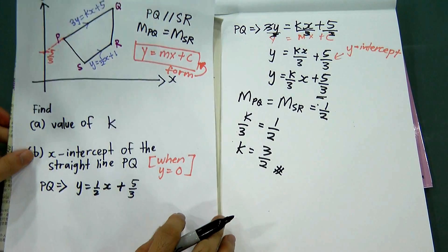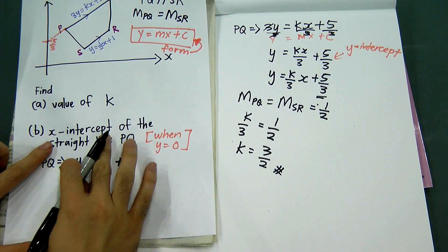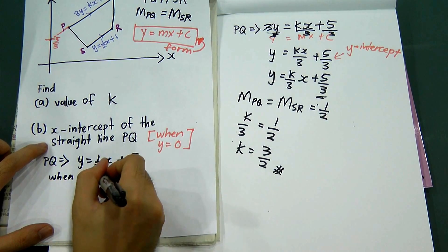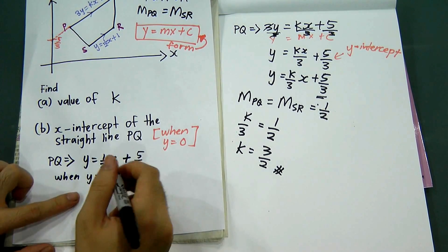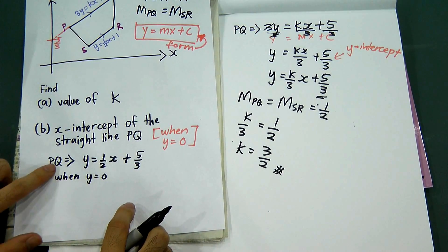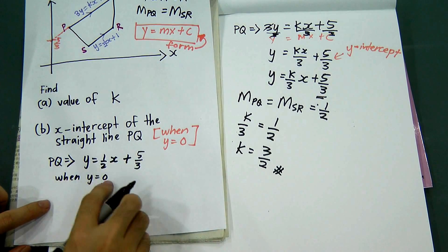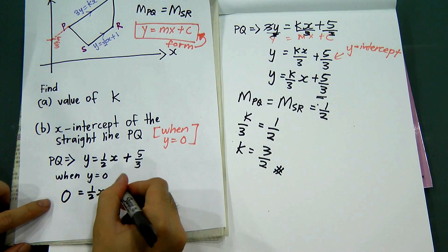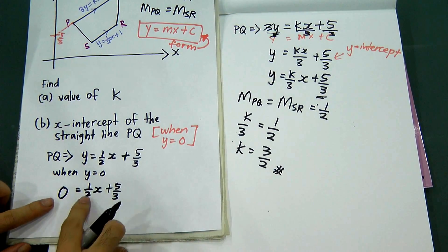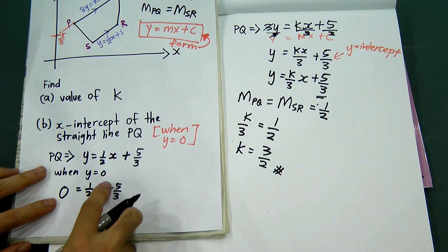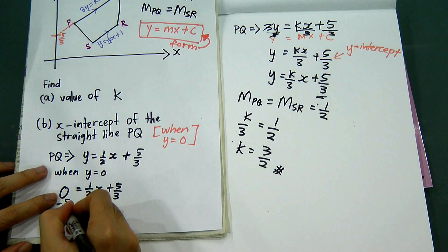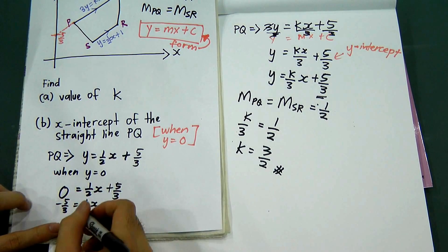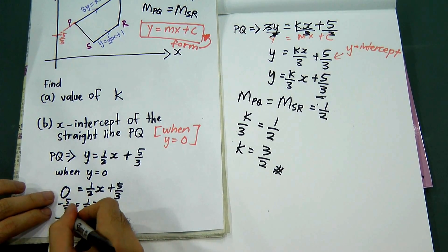With this equation, you can easily find the x-intercept. For x-intercept, set y = 0. Substituting y = 0 into the equation for PQ: 0 = (1/2)x + 5/3. Moving 5/3 to the other side gives -5/3 = (1/2)x. Moving 1/2 to the other side gives x = -10/3.